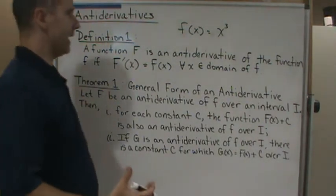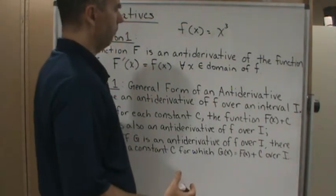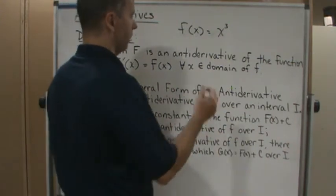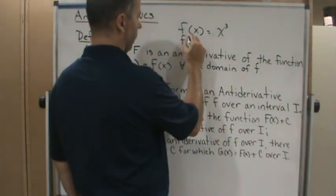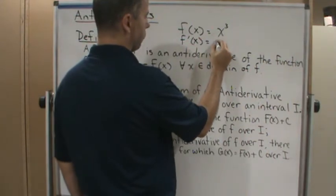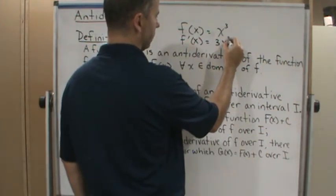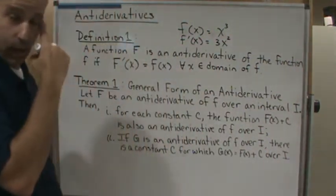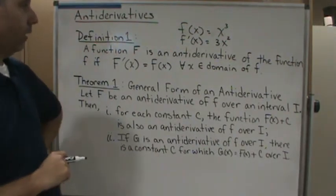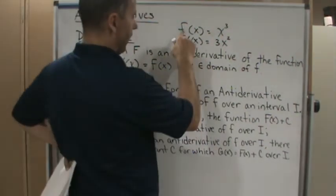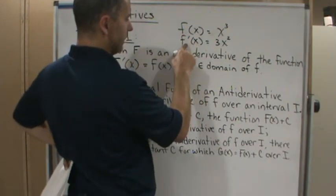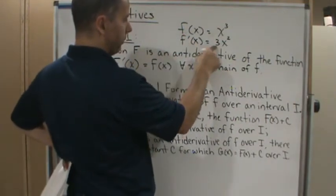So if I take the derivative of f'(x), that gives me 3x squared, right? Now, that means that f is the antiderivative of 3x squared.